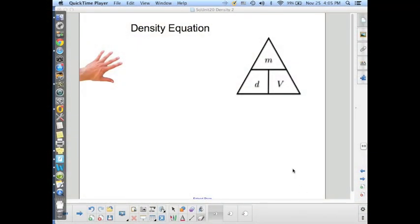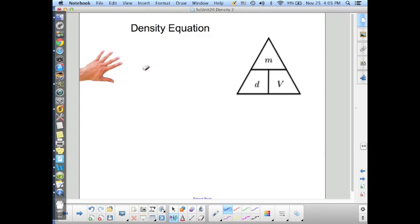Let's say we want to use the density equation to figure out the density of an object. We know that density equals mass divided by volume. Assuming we know the mass is 30 grams and the volume is 15 milliliters, we divide 30 by 15 and get 2 grams per milliliter, which is the density.